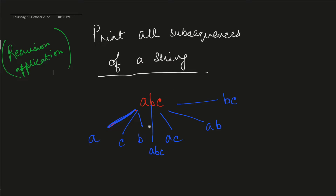A subsequence is basically a sequence of a given string in which some characters are deleted but the order is preserved. For example, given the string 'abc', the possible subsequences are: 'ac', 'ab', 'bc', 'a', 'b', 'c'. As we can see, the order of characters is preserved while some characters are deleted. The purpose of today's session is, given any string, to find and print all possible subsequences of that string.